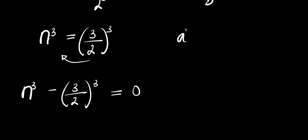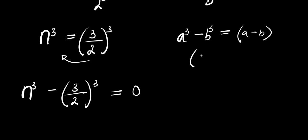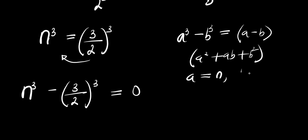Now, using the difference of cubes identity: a³ minus b³ equals (a minus b) times (a squared plus ab plus b squared). Here, a is n and b is 3 over 2.